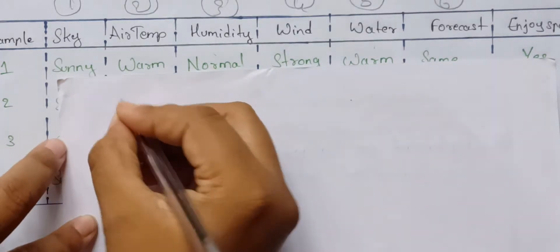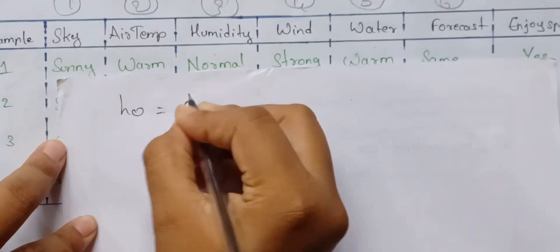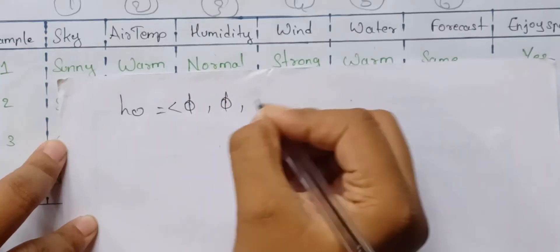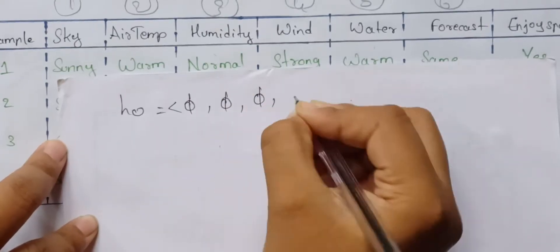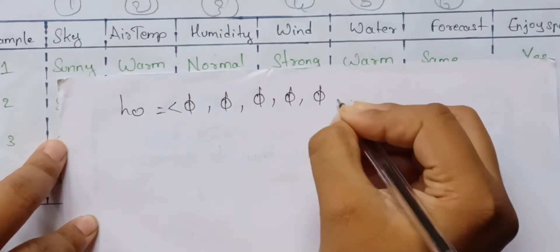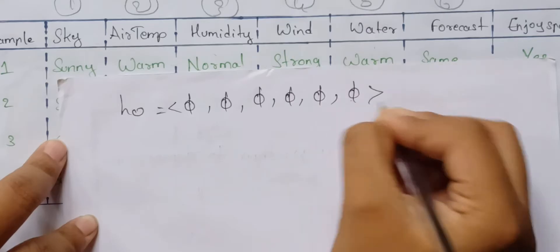First, H0 — initialize. So we have positions 1, 2, 3, 4, 5, 6 for the hypothesis.